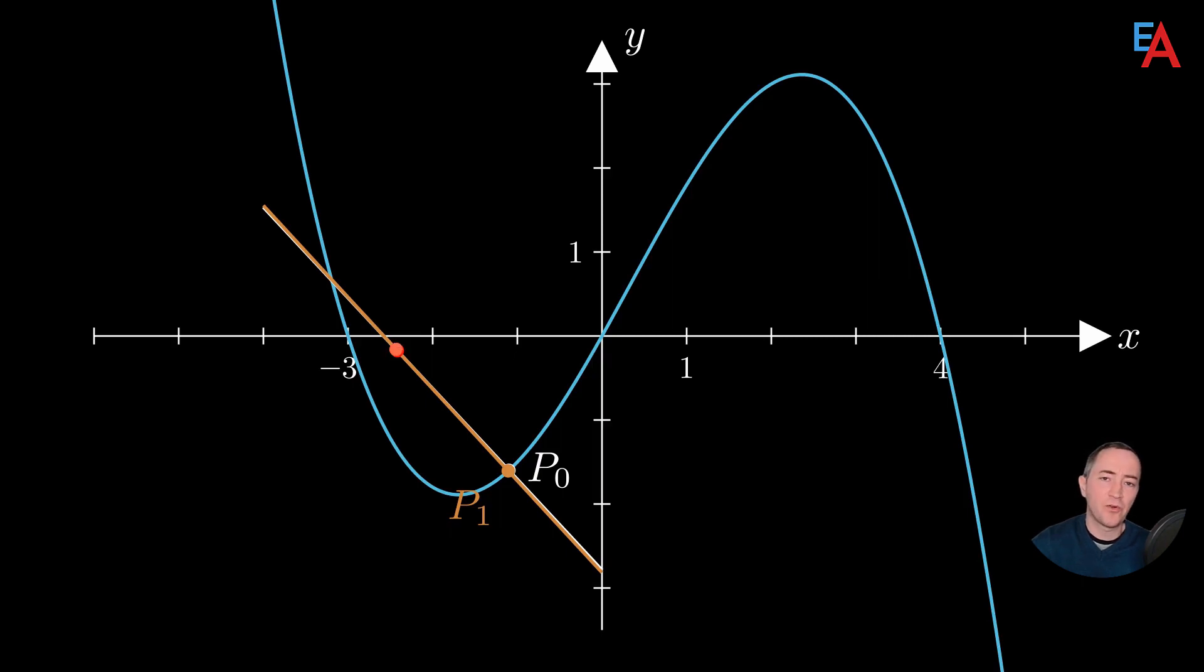And our red points tend to a certain limit red point, which we can define as the center of curvature of the polynomial at point P0. And we can draw a curvature circle.